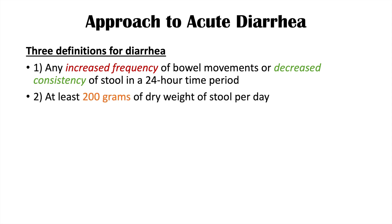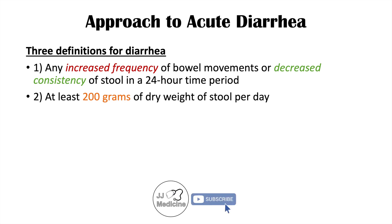The second definition is a bit more precise: diarrhea is at least 200 grams of dry weight of stool per day. This can be difficult to quantify because many times people aren't going to weigh their dry stool per day, so this can be a difficult definition to use.